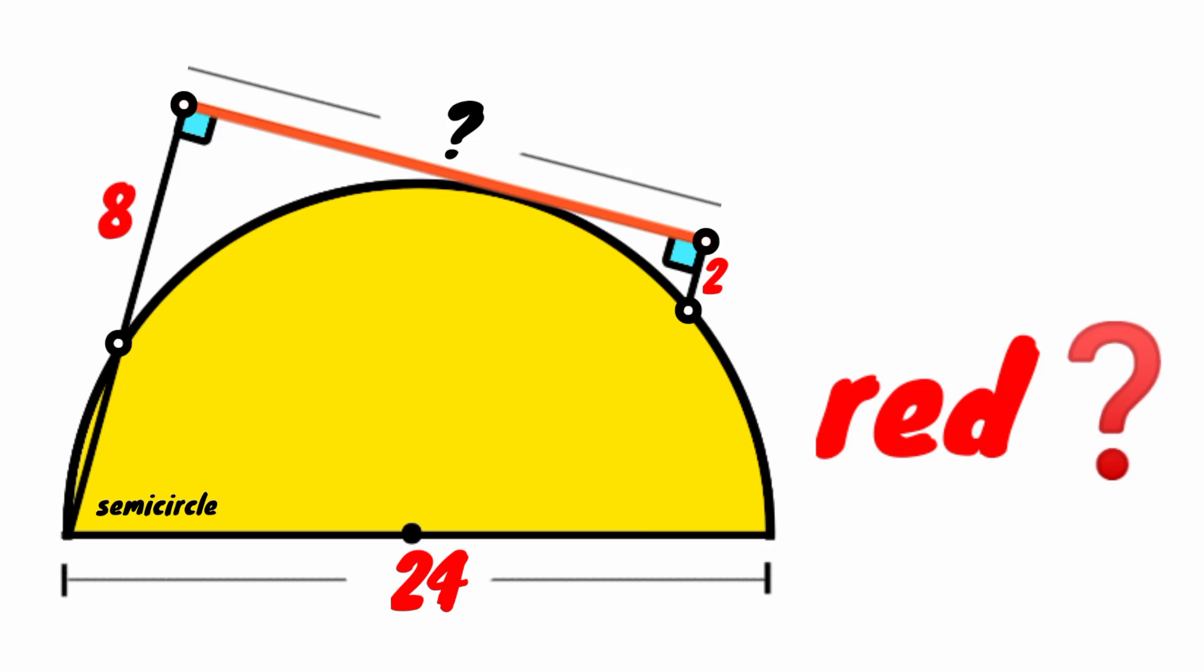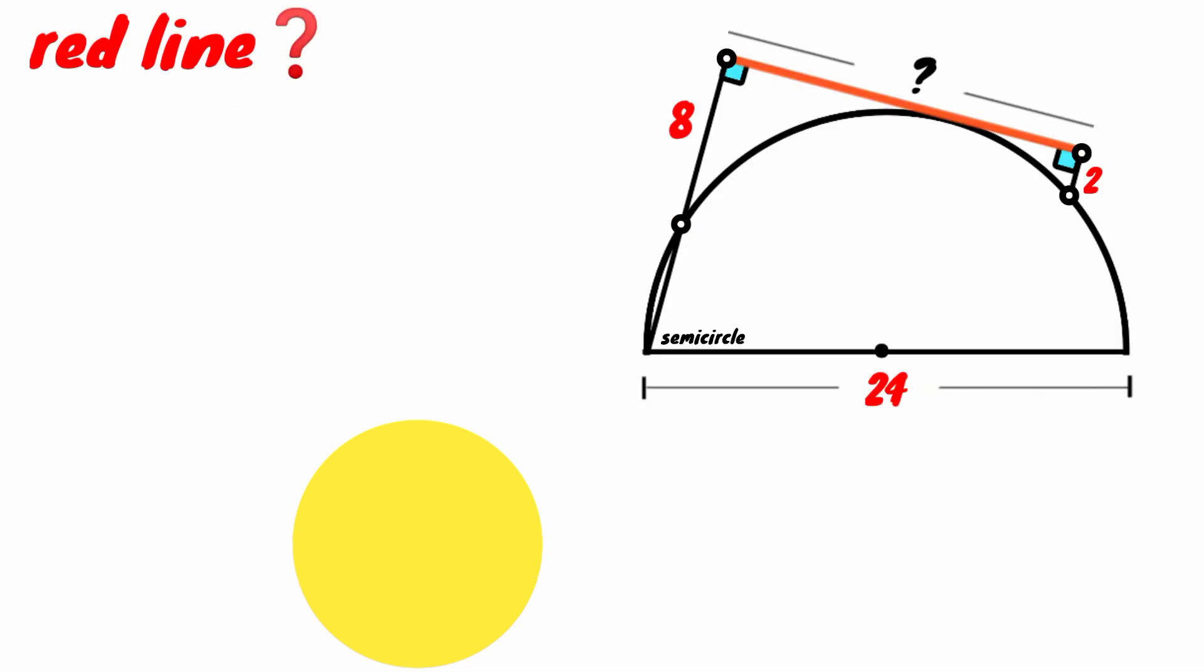Hi friends, you are welcome back to another interesting question. We are asked to calculate the length of the red line which is this here. We have learned this line segment to be 8 units, this little line segment is 2 units, and this side of the semicircle is 24 units. So how can we solve this? How can we calculate the length of the red line?